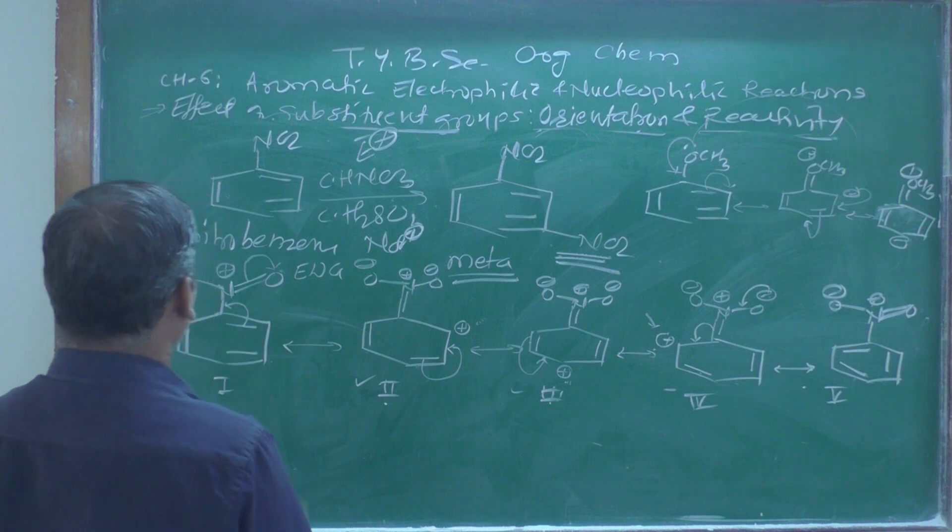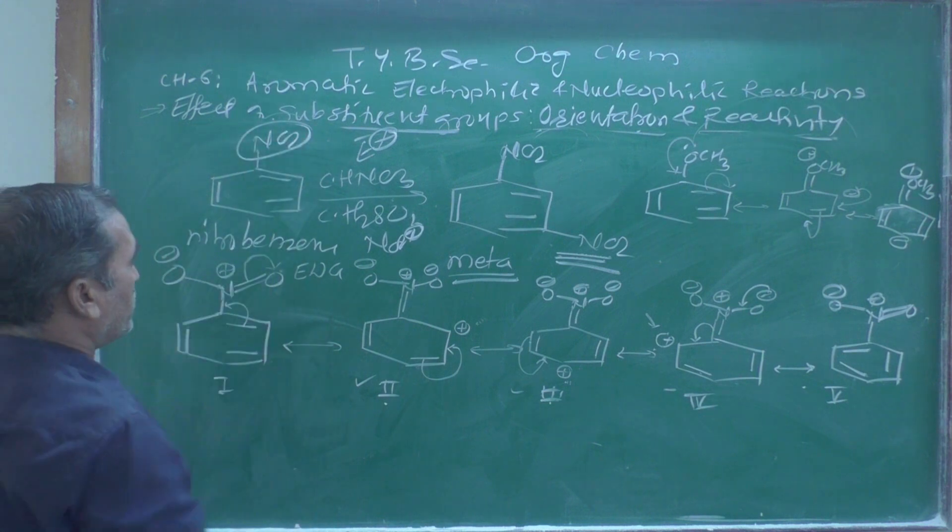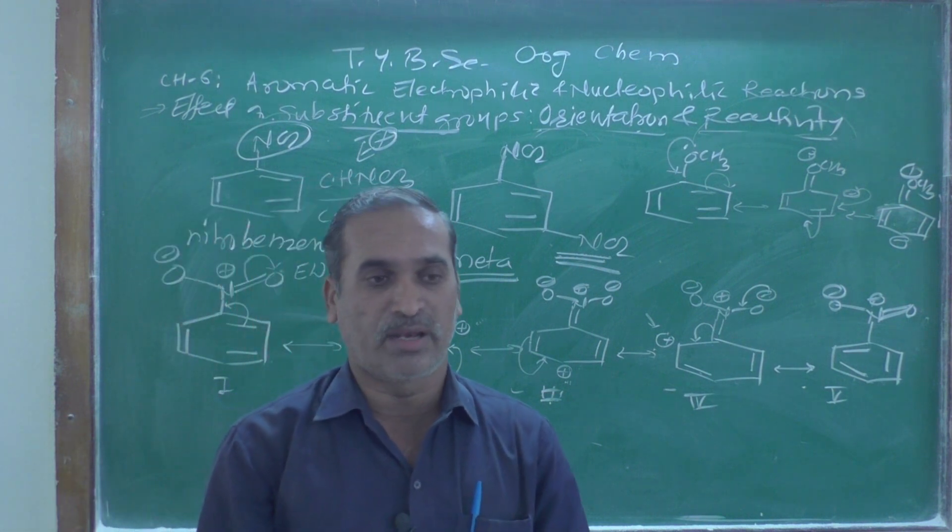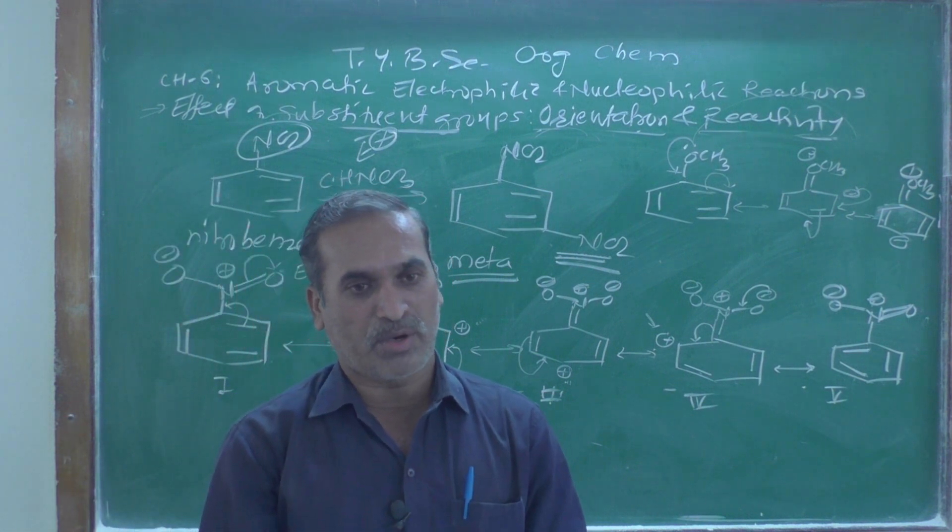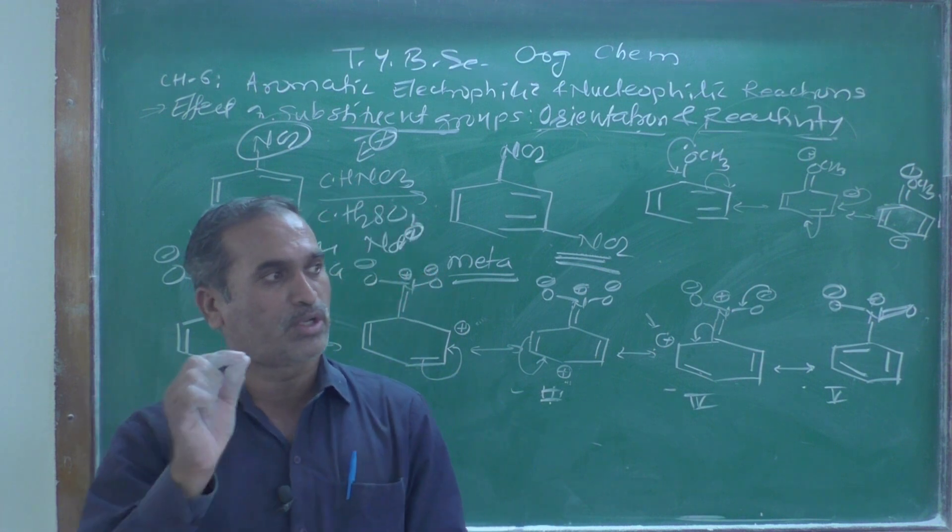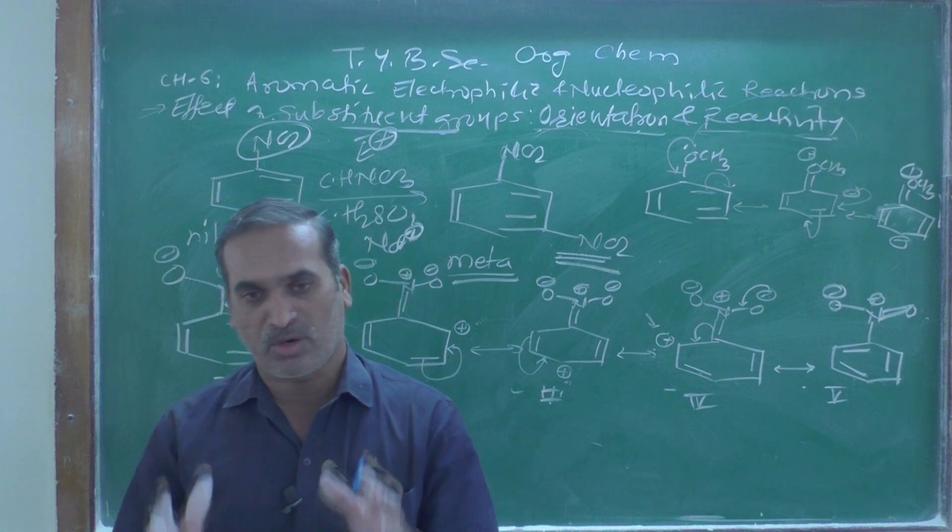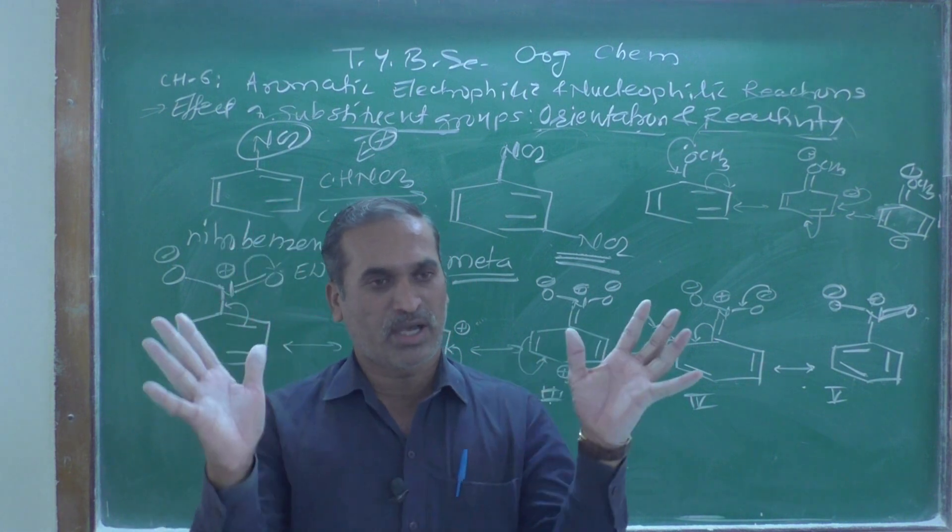This aromatic compound, when containing an electron withdrawing group, the product is always a meta product. Electron donating groups are meta directors, meaning they produce meta products.